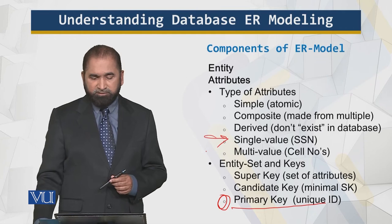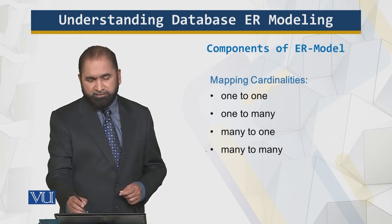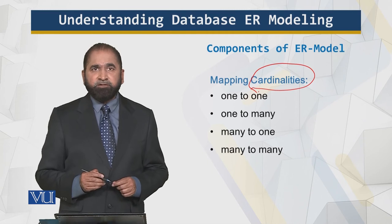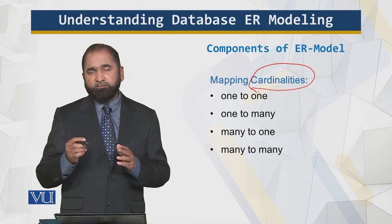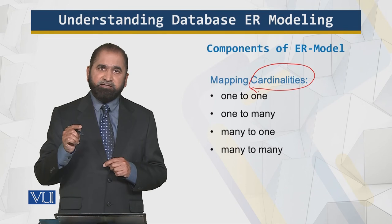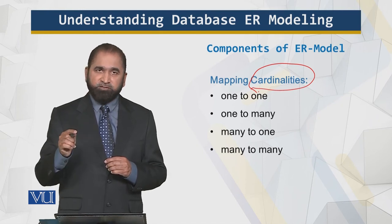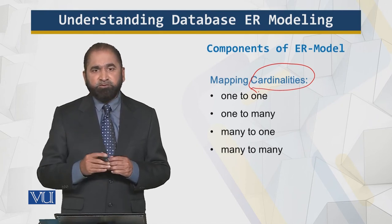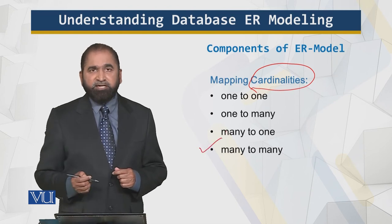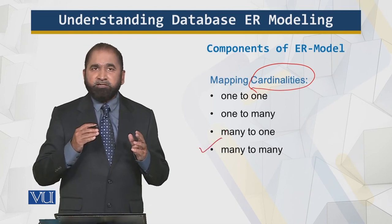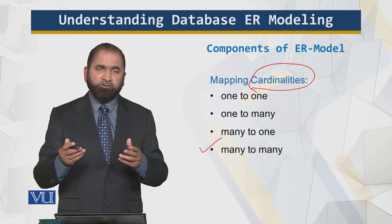Now let's look at how things tie together and go through the cardinalities. Cardinality means the size of the set. A one-to-one relationship is a type of relationship — for example, the car of the CEO can be parked at the spot reserved for the CEO, so that is a one-to-one relationship. Then there are one-to-many relationships and many-to-many relationships. For example, a student can take multiple courses and a course can be taken by multiple students. I will go into all of these details.